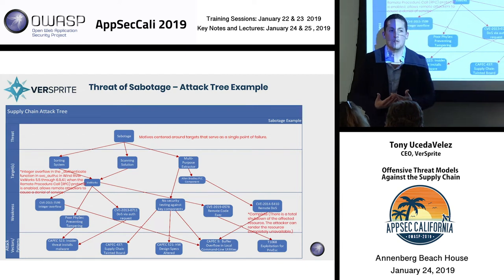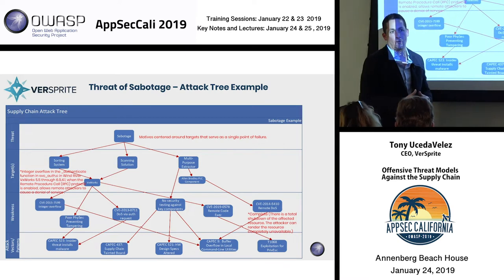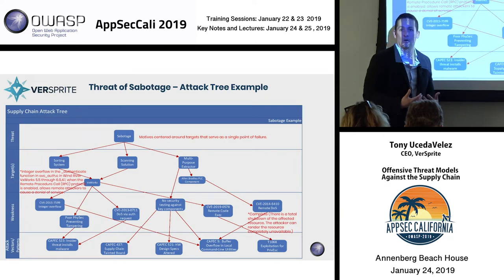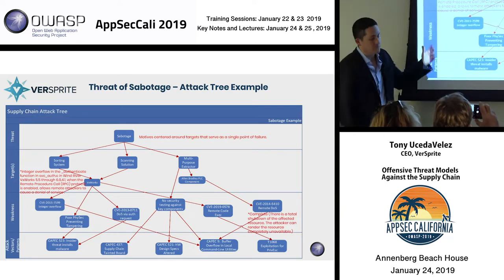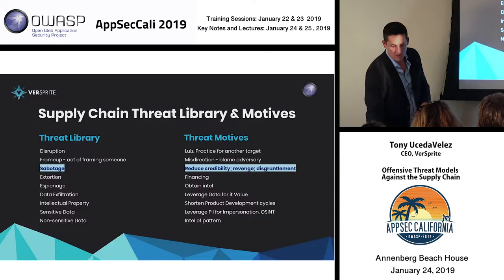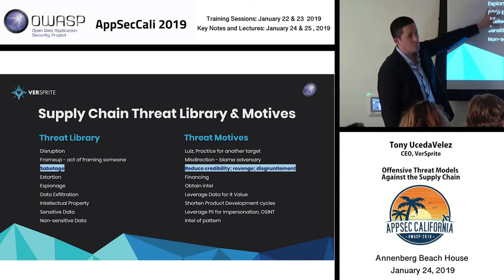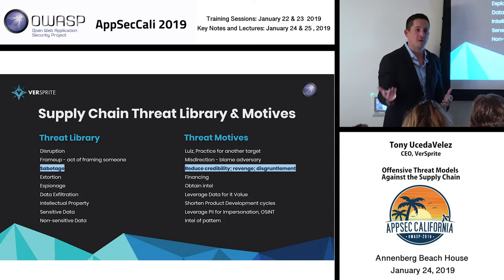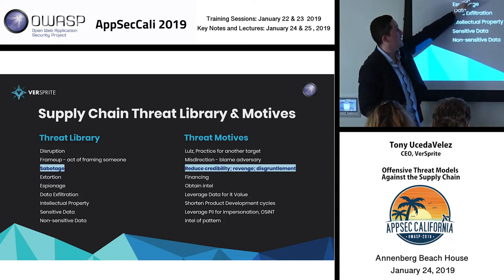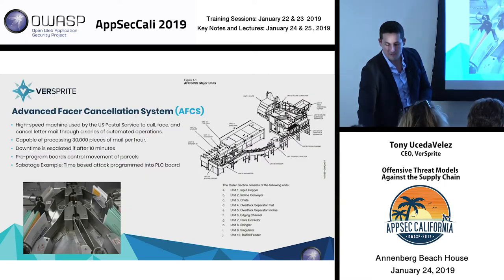When you do threat modeling, you need to do attack trees. Most people when they do threat modeling might stop at DFDs. DFDs are great from a white hat perspective, but in order to truly have an adversarial exercise, if you've built a threat library that includes these items, you want to create an attack tree for each one of these nodes. Your attack tree might vary if you're in different industries, and you want to build it out so that it looks something like what I have here.